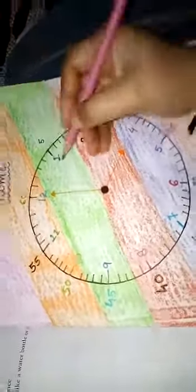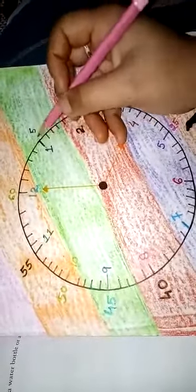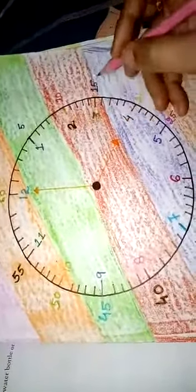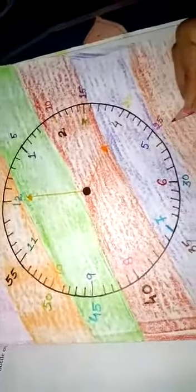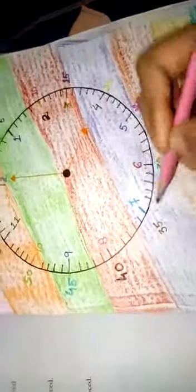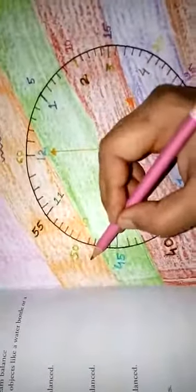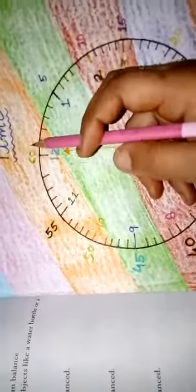So, how can we read this time? Today we will understand this. See. In the clock, the table of 5 always runs. 5 ones are 5, 5 twos are 10, 5 threes are 15, 5 fours are 20, 5 fives are 25, 5 sixes are 30, 5 sevens are 35, 5 eights are 40, 5 nines are 45, 5 tens are 50, 5 elevens are 55, 5 twelves are 60.